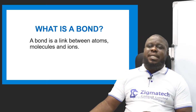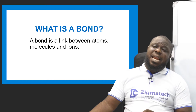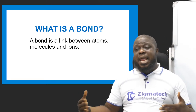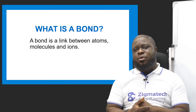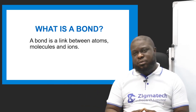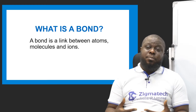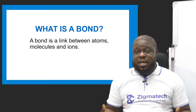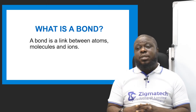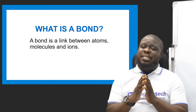What is a bond? A bond is a link between atoms, molecules and ions. Any attraction between atoms, molecules and ions is a bond. Atoms and molecules come together — fine. Ions and atoms come together — fine. Molecules and ions come together — fine. That is the bond.